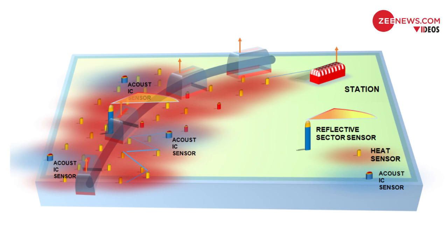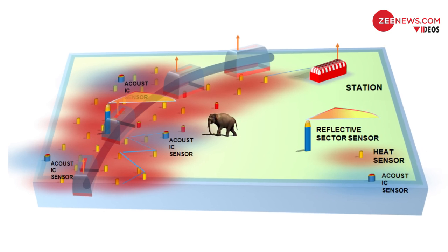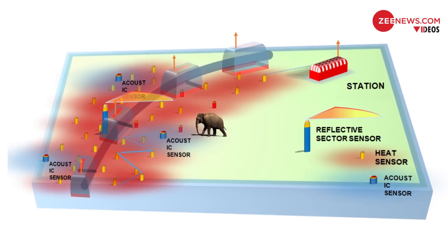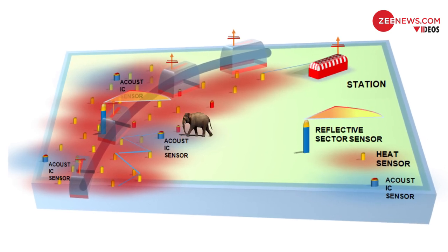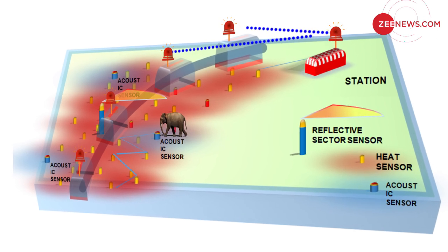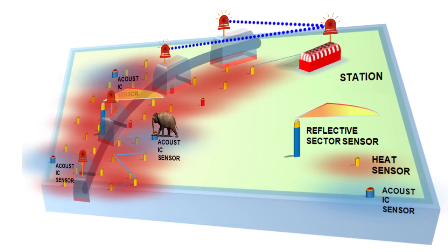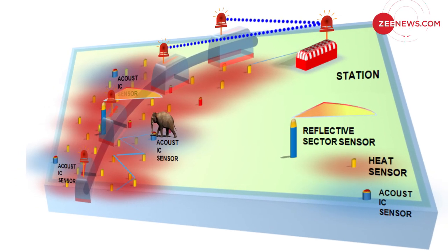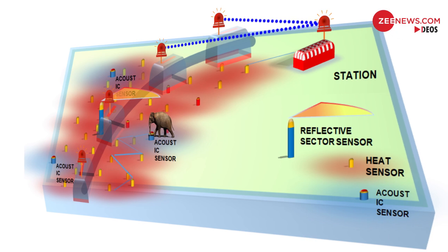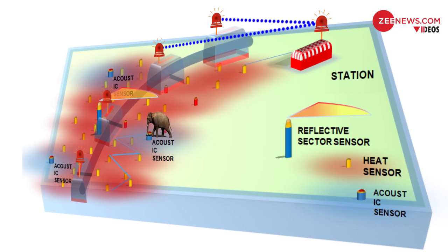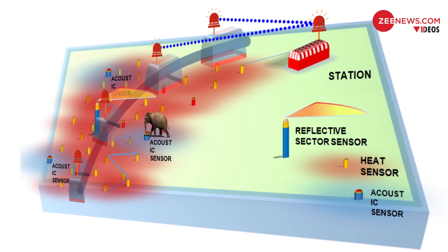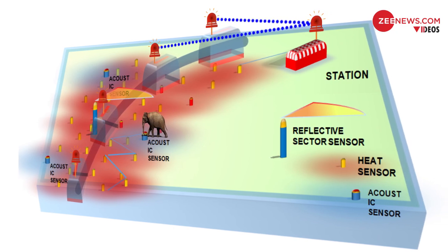These are the four sensors: acoustic sensors, which are buried in the ground and detect the footfall of elephants; cameras to capture the presence of elephants in both darkness and light; a reflectometer to reflect light from the camera; and passive infrared sensors to detect infrared radiation from a living animal.